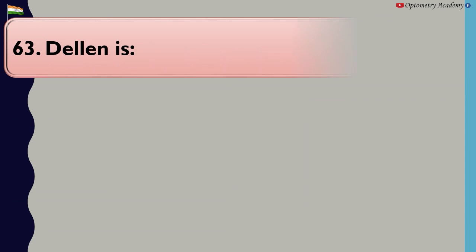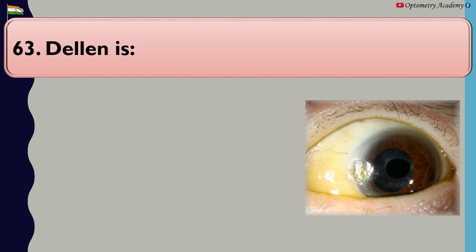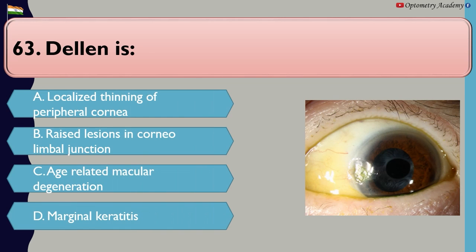Answer: D. Dellen. Features include: A. Localized thinning of peripheral cornea, B. Raised lesions in corneolimbal junction, C. Age-related macular degeneration, D. Marginal keratitis.